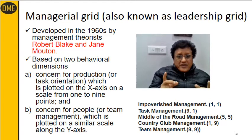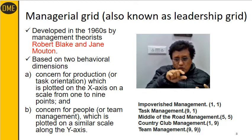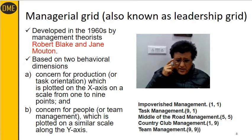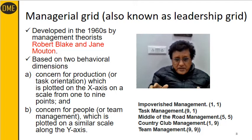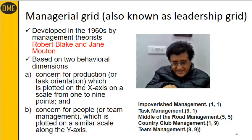The leadership grid is based upon two behavioral dimensions, plotted on a graph. On the x-axis, you put the manager's concern for production or achievement. For example, if it is a factory manager, how much is he concerned about production? If he is a sales manager, his concern for revenue numbers, top line or bottom line, or number of units sold. So the x-axis represents the manager's concern for production or sales — you can call it the task achievement axis.